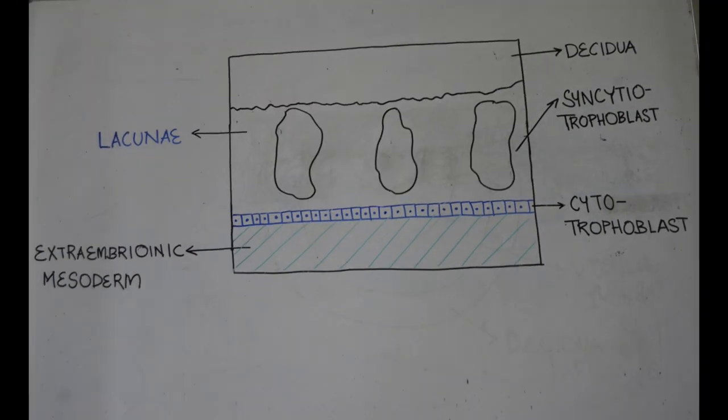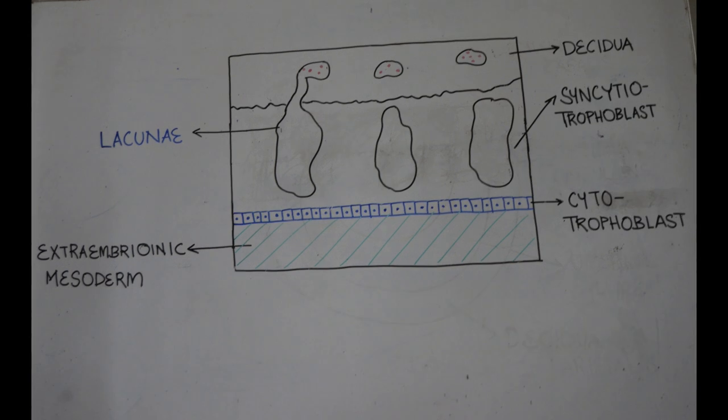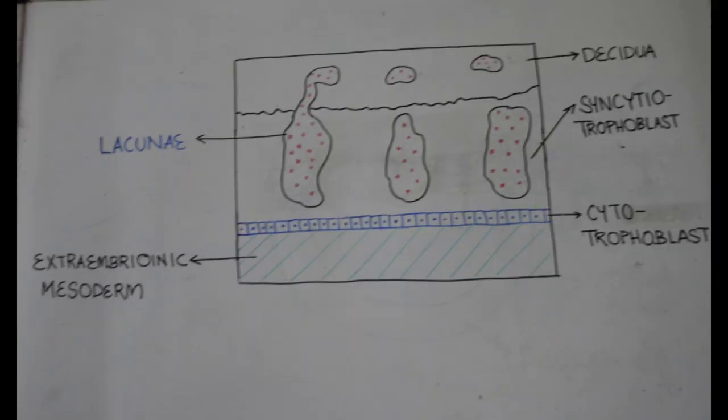The lacunae gradually communicate with each other, so that eventually one large space is formed. Each trabecula is now surrounded all around by this lacunae space. The syncytiotrophoblast grows into the endometrium. As the endometrium is eroded, some of its blood vessels are opened up and blood from them fills the lacunae space.